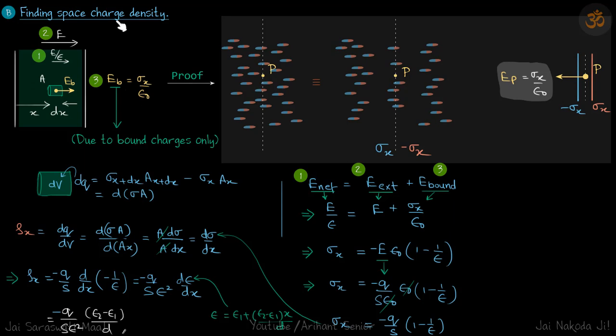Now for the second part — space charge density. We are going to do this in a way you are already familiar with, without using higher mathematics, keeping it within our scope. Space charge density: if you take a small volume element inside the dielectric, the net charge inside that volume divided by the volume of that element is the space charge density — simple in definition at least.